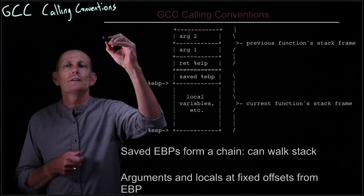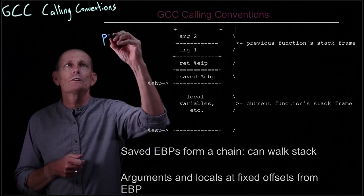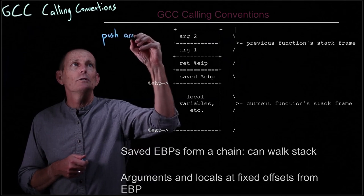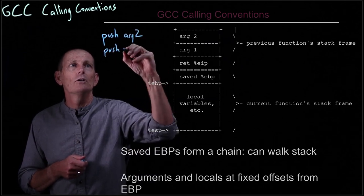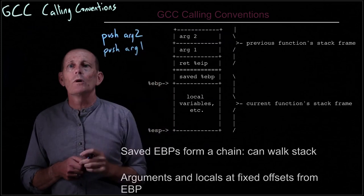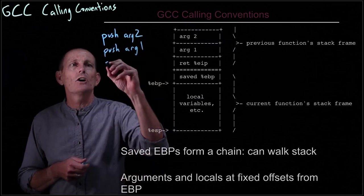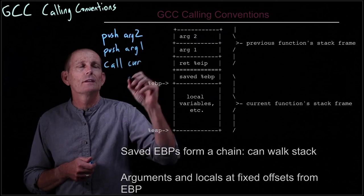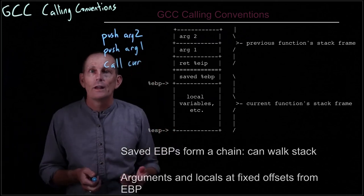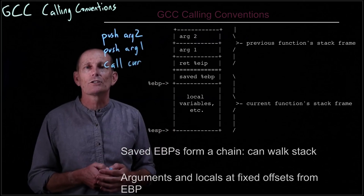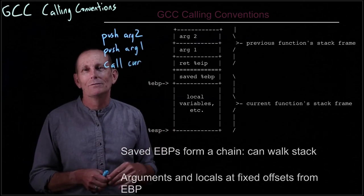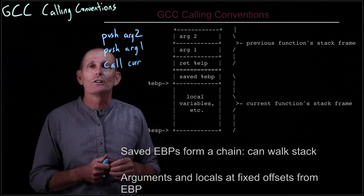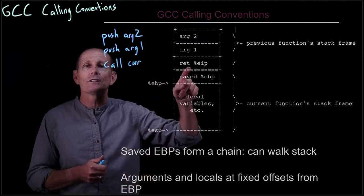So basically what happens is there is a push from the previous function: push arg2, push arg1, and then call whatever the current function is. When you call a function, that will push the current instruction pointer — or rather the instruction pointer to which you're going to be returning, so the one after the call instruction — onto the stack.